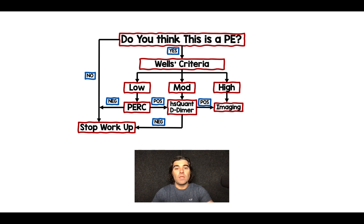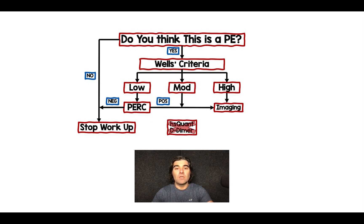Now, if you happen to work at a place where you don't have this high-sensitivity quantitative D-dimer, you can't use that because you're going to miss too many people potentially having a pulmonary embolism. So unfortunately, for those without that high-sensitivity quantitative D-dimer, you're going to go straight to imaging for your moderate-risk group.